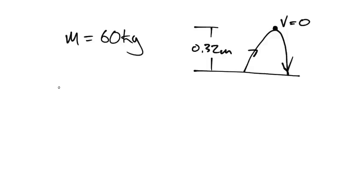In order to do this, we could use a kinematics equation and say V final squared equals V initial squared plus 2A delta D. And our initial velocity would be 0 in this case at the top. And they're going to fall a distance of 0.32.